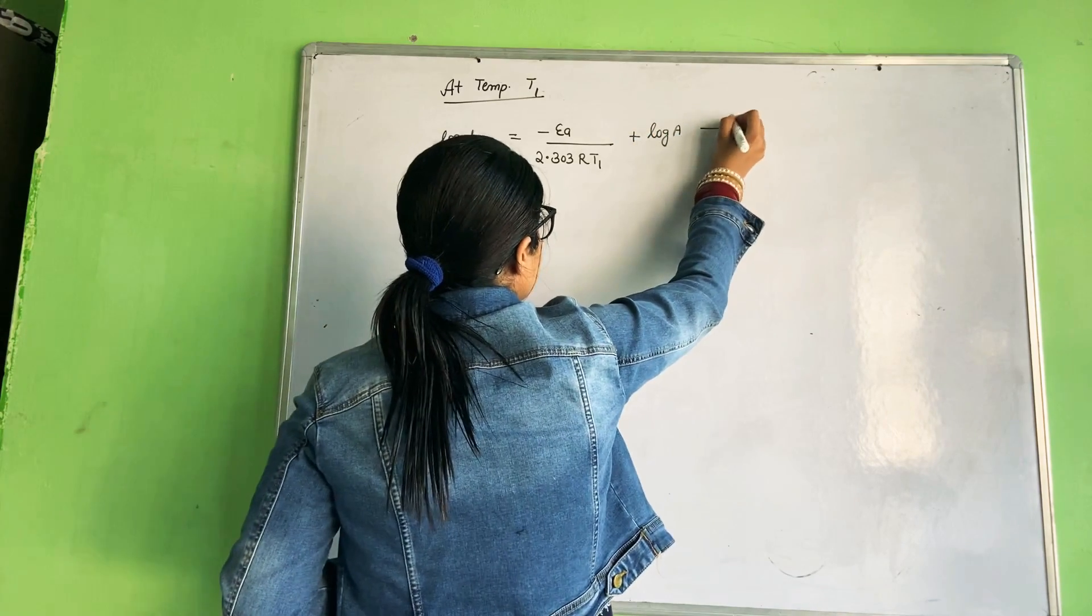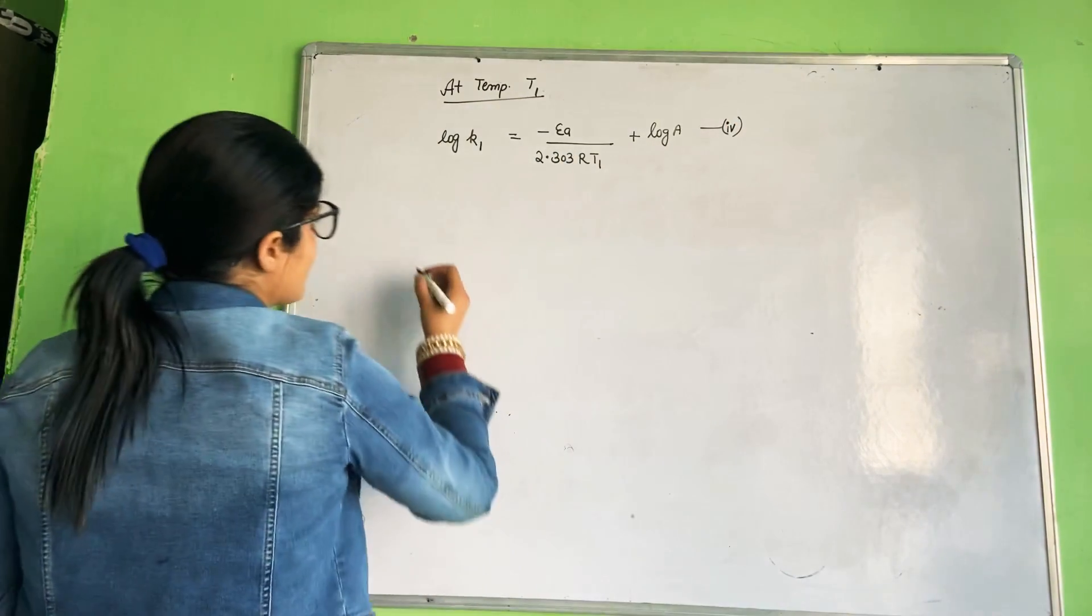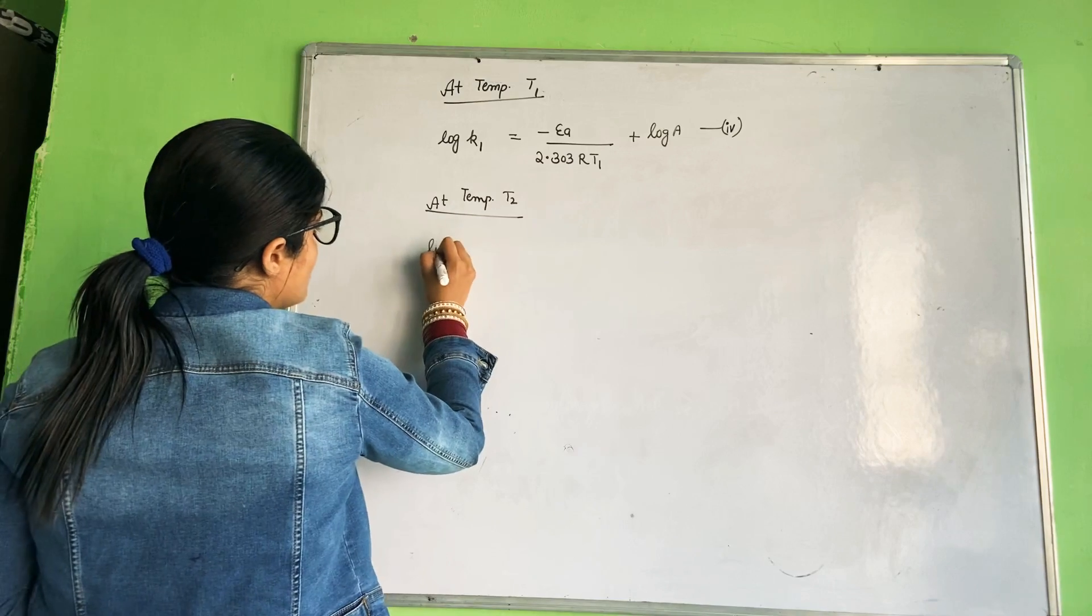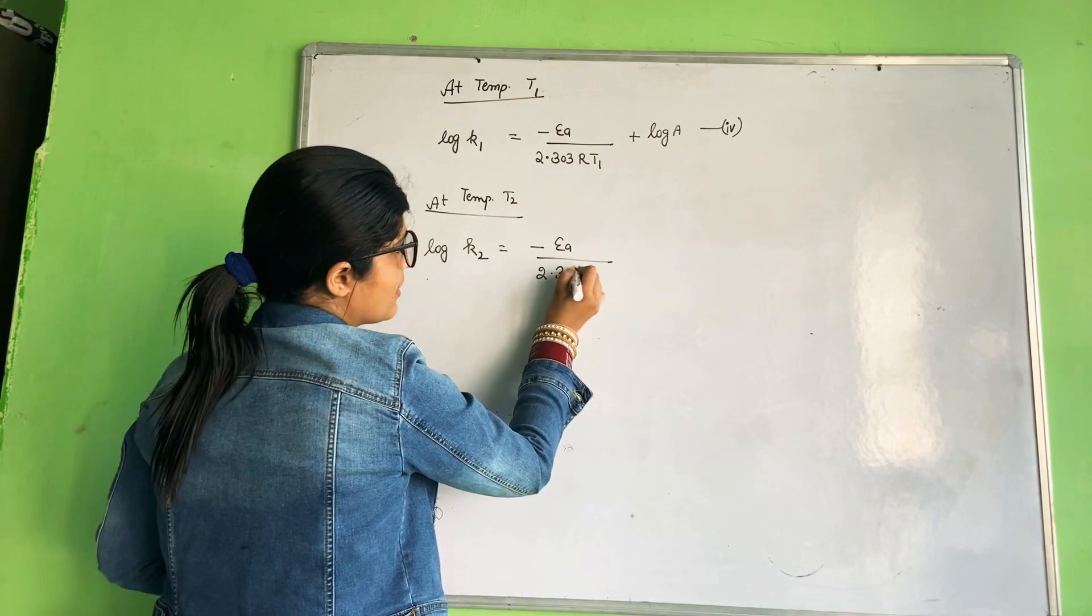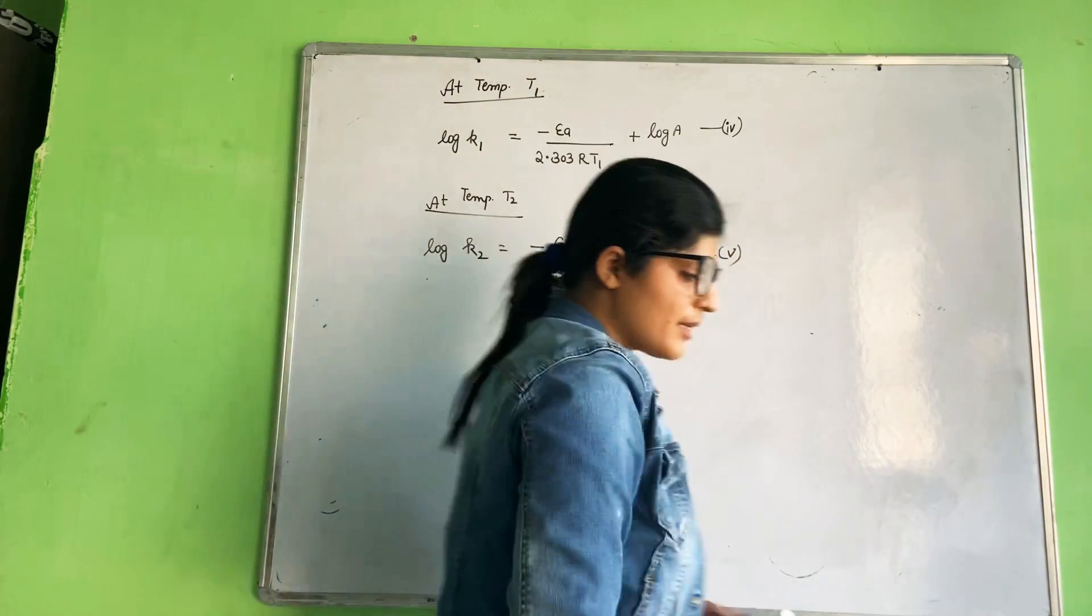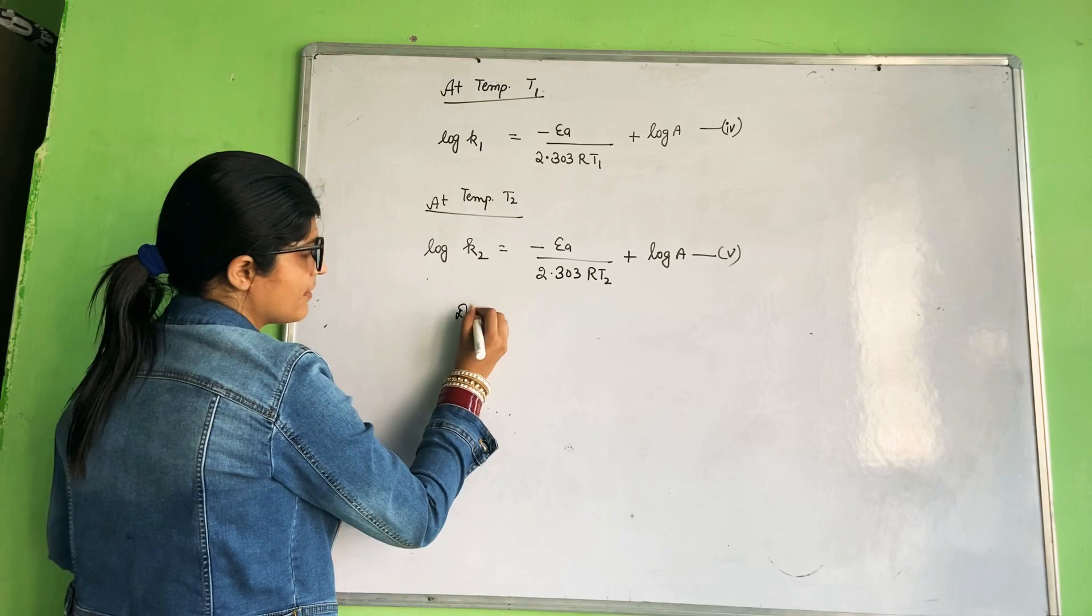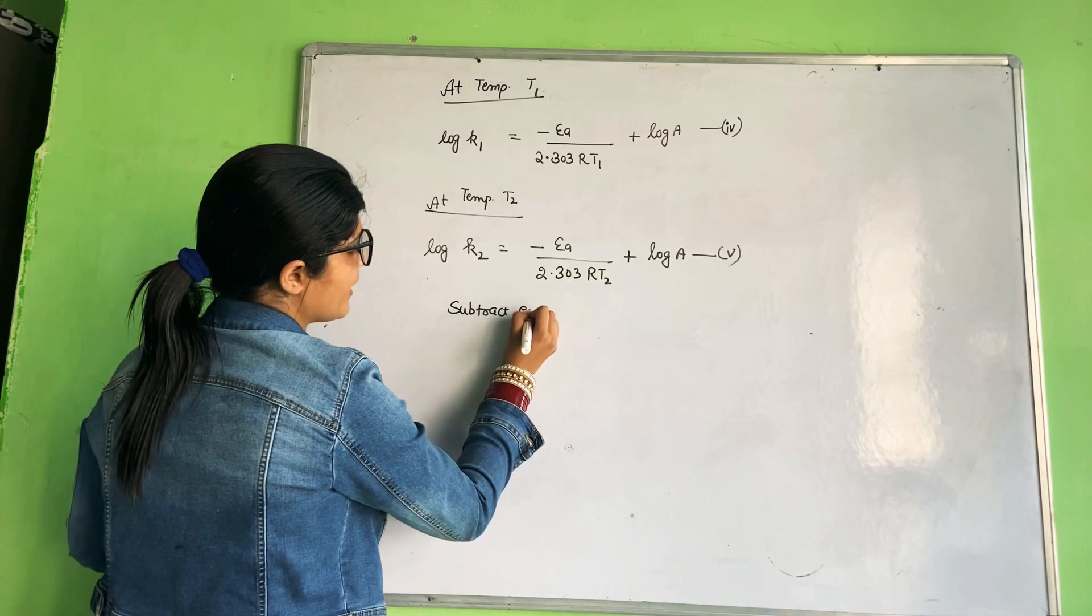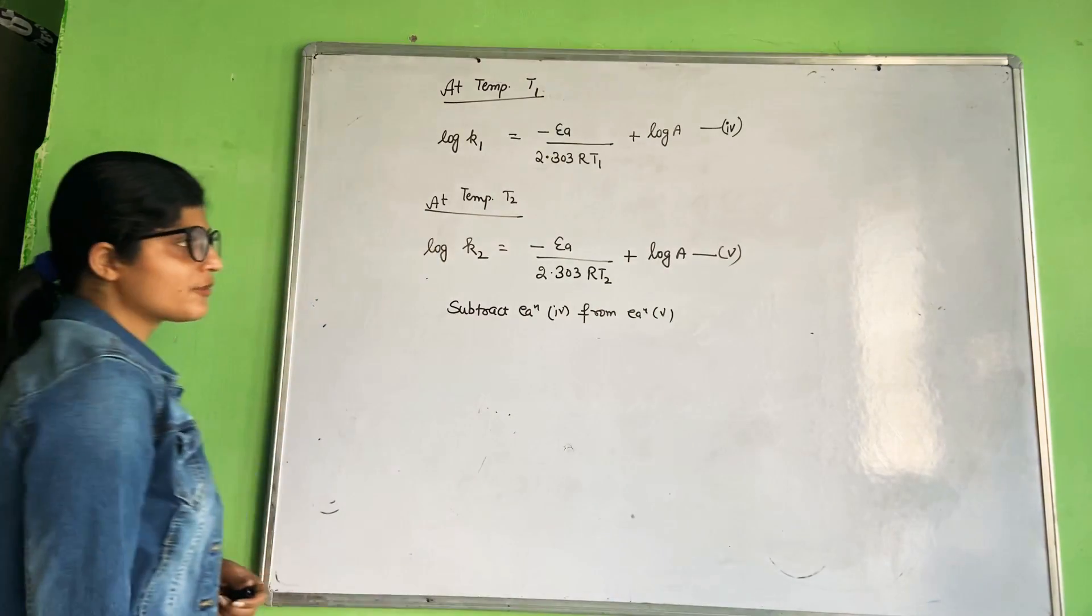Constant A's value remains the same. This becomes your equation number 3. At temperature T2, this becomes your equation number 4. Now subtract equation 3 from equation 4.